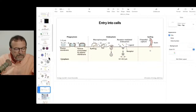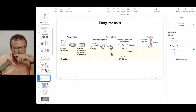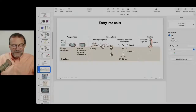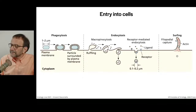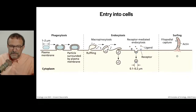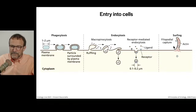Now let's talk about entry into cells. Viruses are hitchhiking onto pathways that cells use to take up things. Cells have multiple ways to take up material because they need to — they need nutrients, need to get rid of things, and in some cases have to take up bacteria and destroy them. Here we have a couple of different ways that things get into cells.